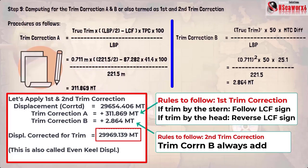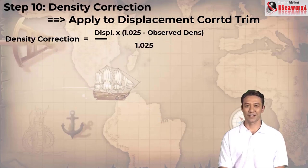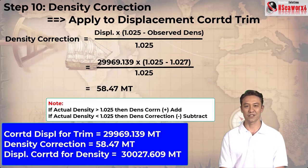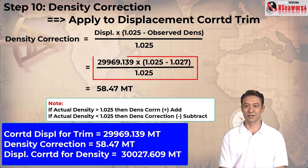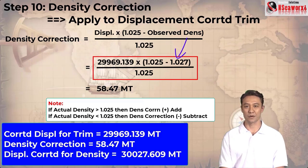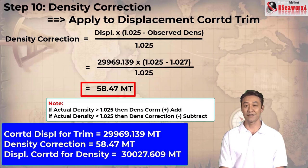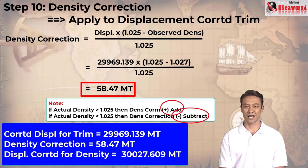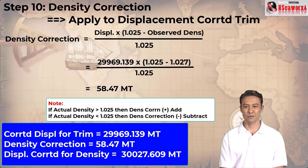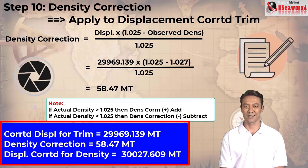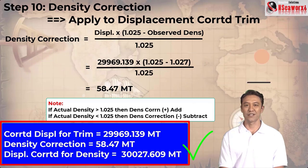Step 10: density correction. Apply to displacement corrected for trim. Formula: displacement times (1.025 minus observed density) divided by 1.025. So: 29969.139 times (1.025 minus 1.027) divided by 1.025 = 58.47 metric tons. Note: if actual density is greater than 1.025, density correction is added; if less than 1.025, it is subtracted. Since 1.027 is greater, we add: 29969.139 plus 58.47 = displacement corrected for density of 30027.609 metric tons.